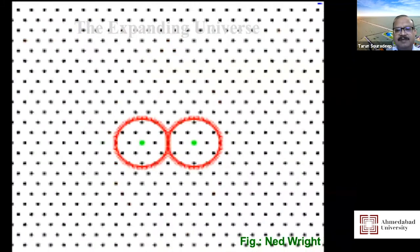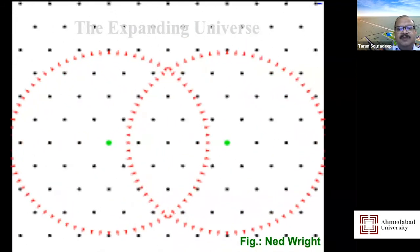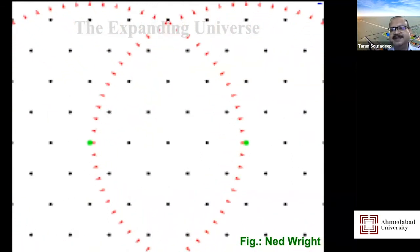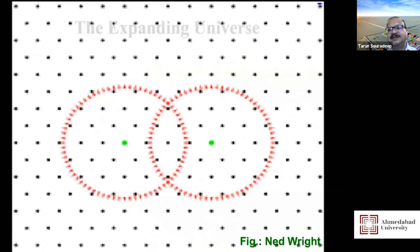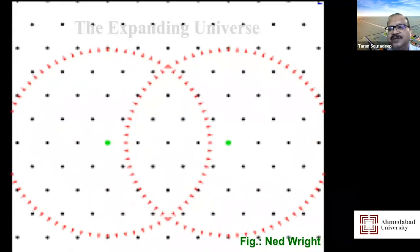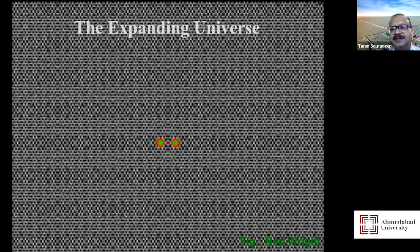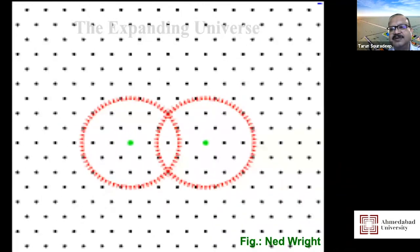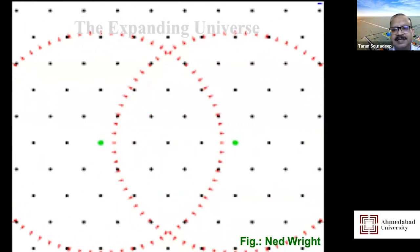Between two galaxies light would have traveled quickly earlier, but now it takes a long time because the lattice has expanded and more distance must be covered. These are things you have to get used to in cosmology, but cosmology is just physics in this expanding arena — our own basic physics that we do in labs.